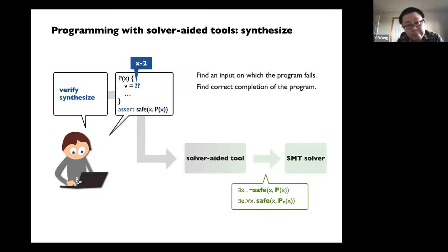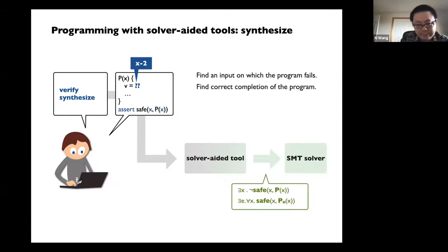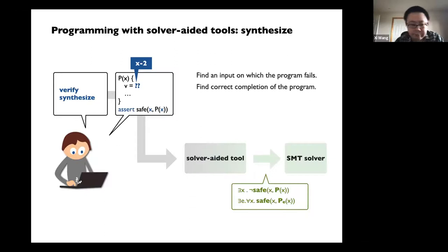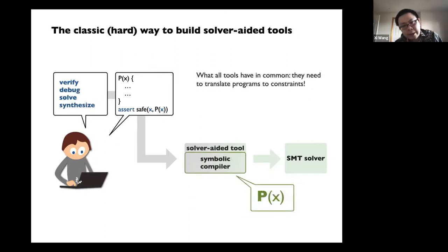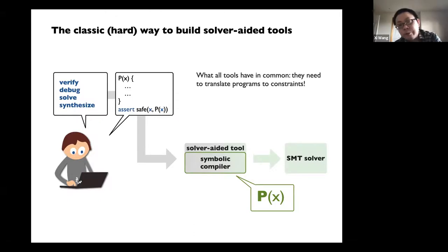We're not going to talk too much about program synthesis; we'll mostly focus on verification. But no matter what you do, all those formal or symbolic tools have a key component: a symbolic compiler that takes your program and encodes it into constraints, so you can send them to your SMT solver. The question is: how do you write one? And that's actually a really hard task.